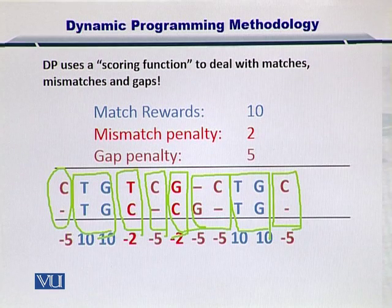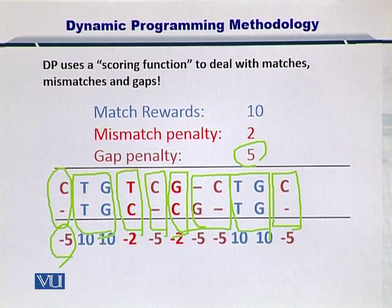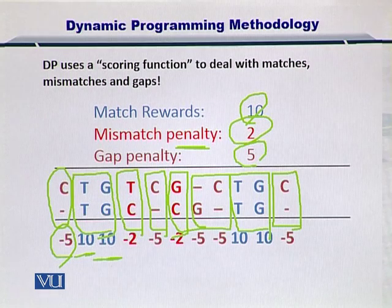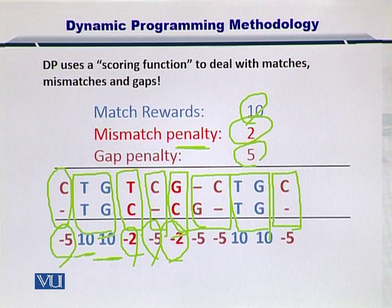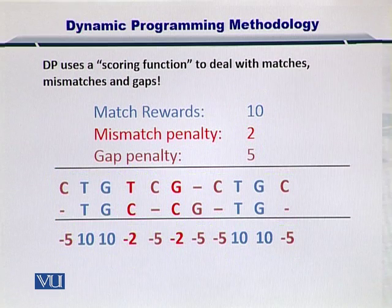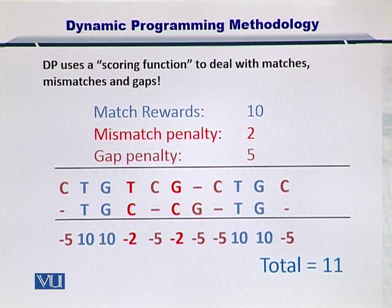Here you go. The gap penalty is minus 5, so I've written minus 5 here because C has no corresponding nucleotide. T matches with T, so 10 goes here. Another 10 — G matches with G. T does not match with C, so it's minus 2. C has a gap, so it's minus 5. G does not match with C — minus 2. Then there are two gaps. Then two matches and one gap. In this way I've computed the overall score, which is simply the sum of all these numbers. The total score is 11.